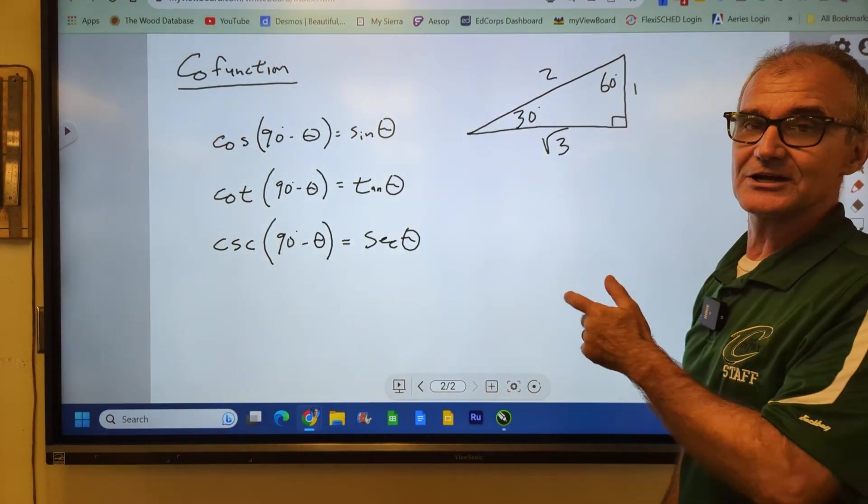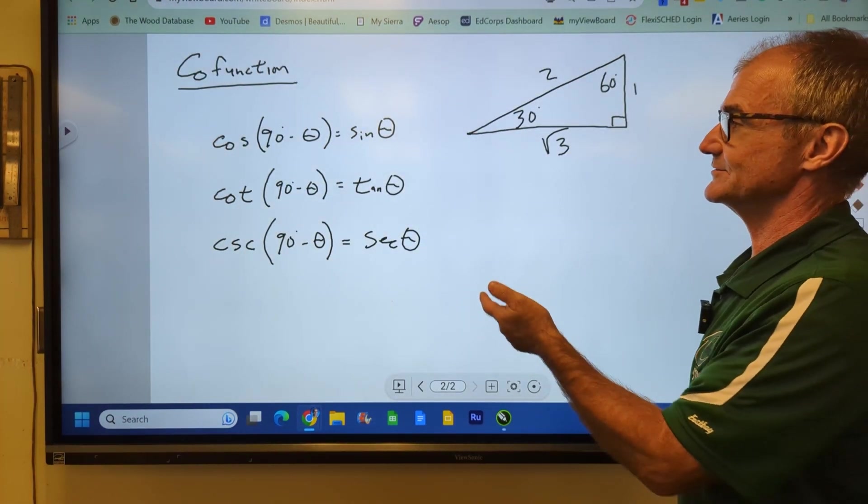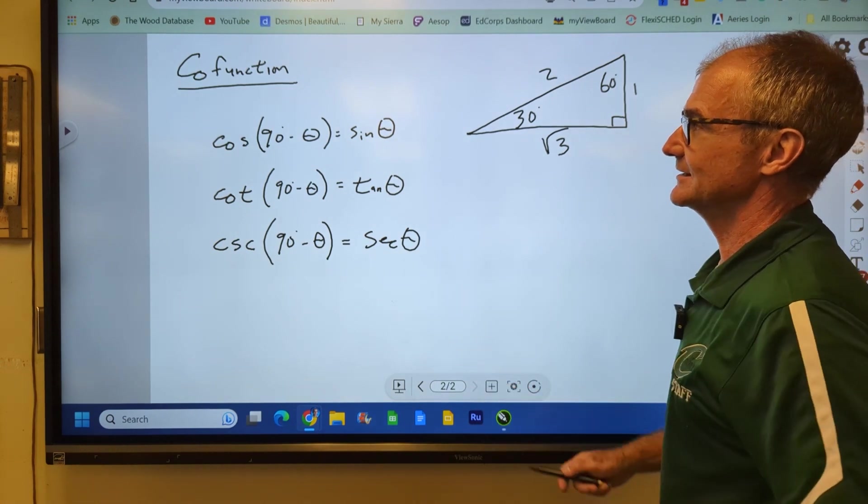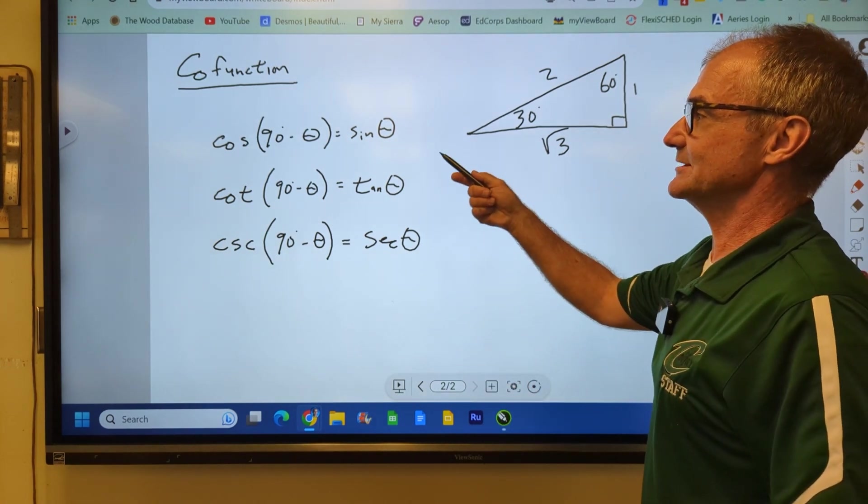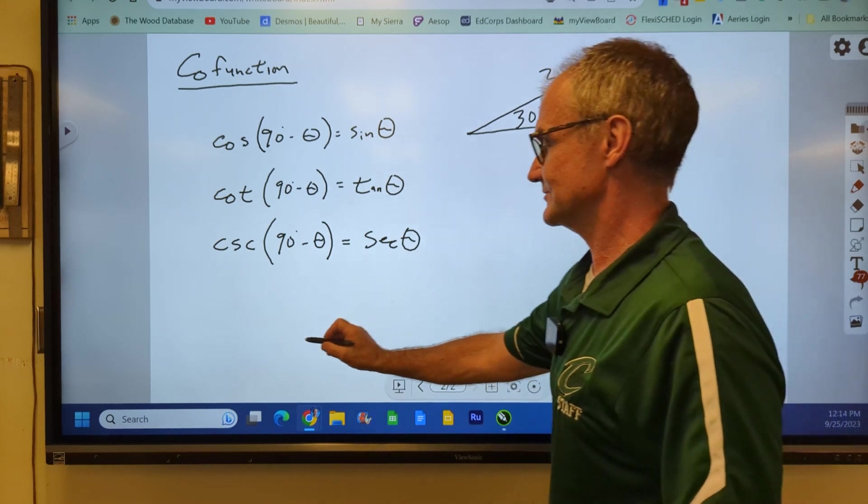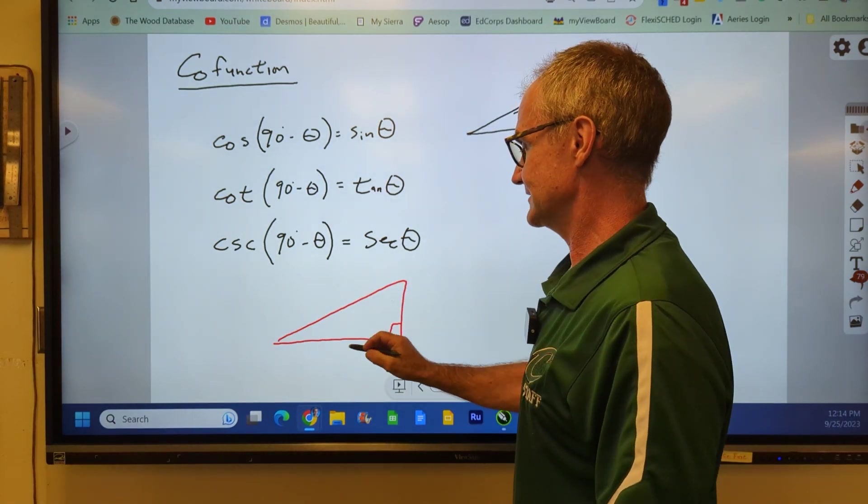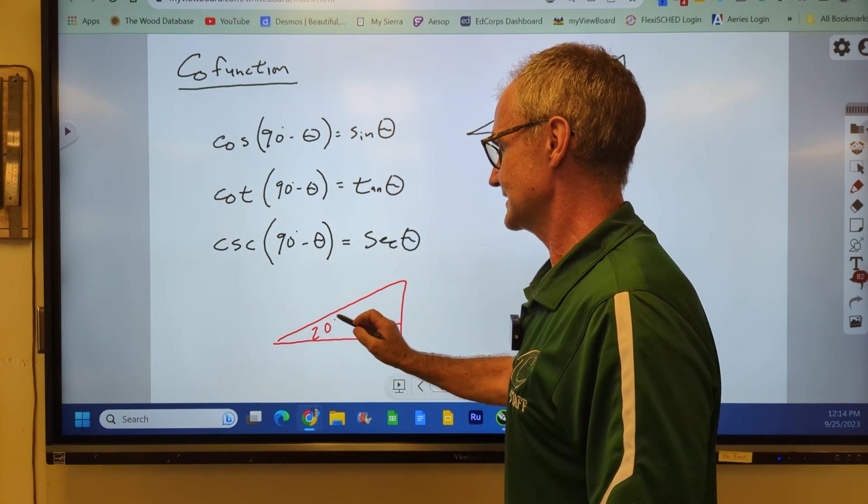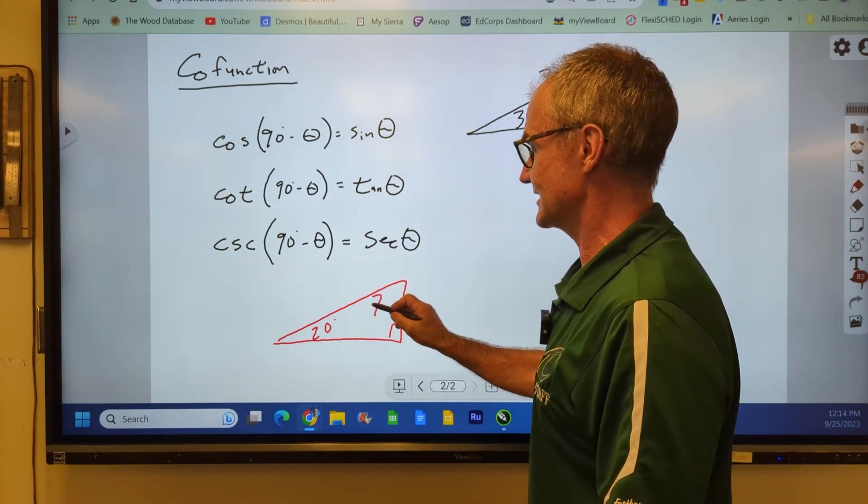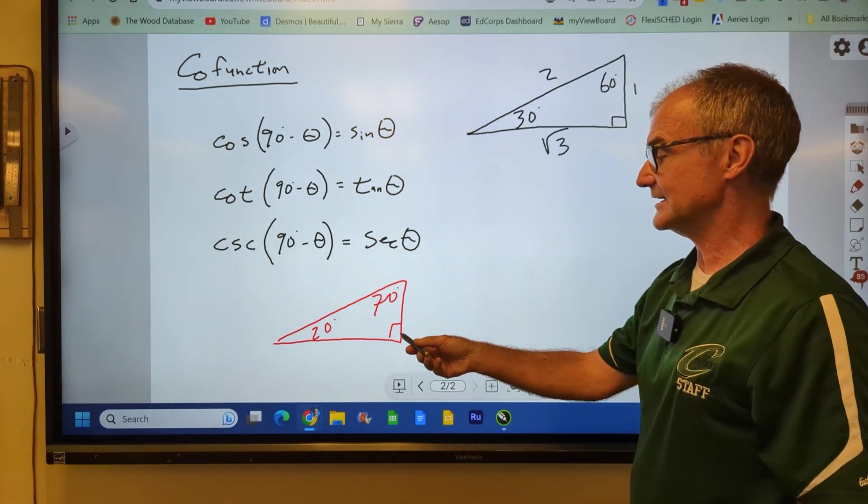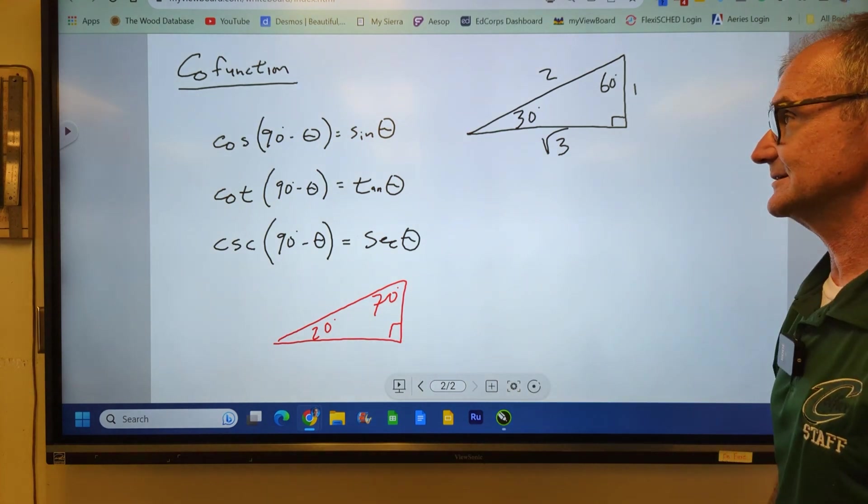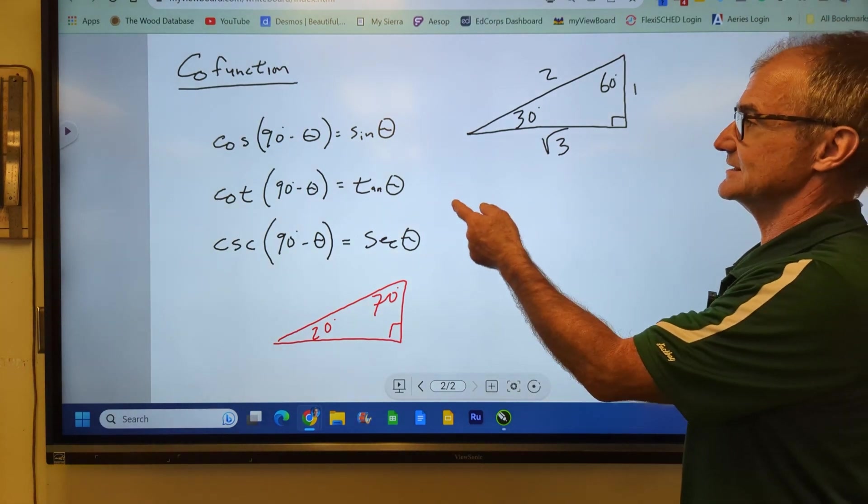All right, let's take a look at our cofunction identities right now. There are six of them. I have three of them written up here. And they're really about the complement of an angle. So all of this is right triangle trig. So remember in any right triangle, I know this angle is 20 degrees. This angle right here has to be its complement. All three angles add up to 180, but I have a right angle in there. So where our cofunction identities work,